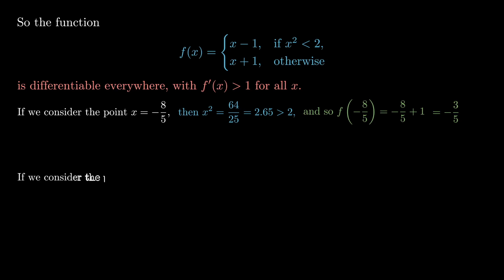Now consider the point x equal to minus 6 on 5. Squaring this will be 36 on 25, which is 1.44, which is less than 2. And so the formula tells us that f of minus 6 on 5 is minus 6 on 5 minus 1, but that's minus 11 on 5.